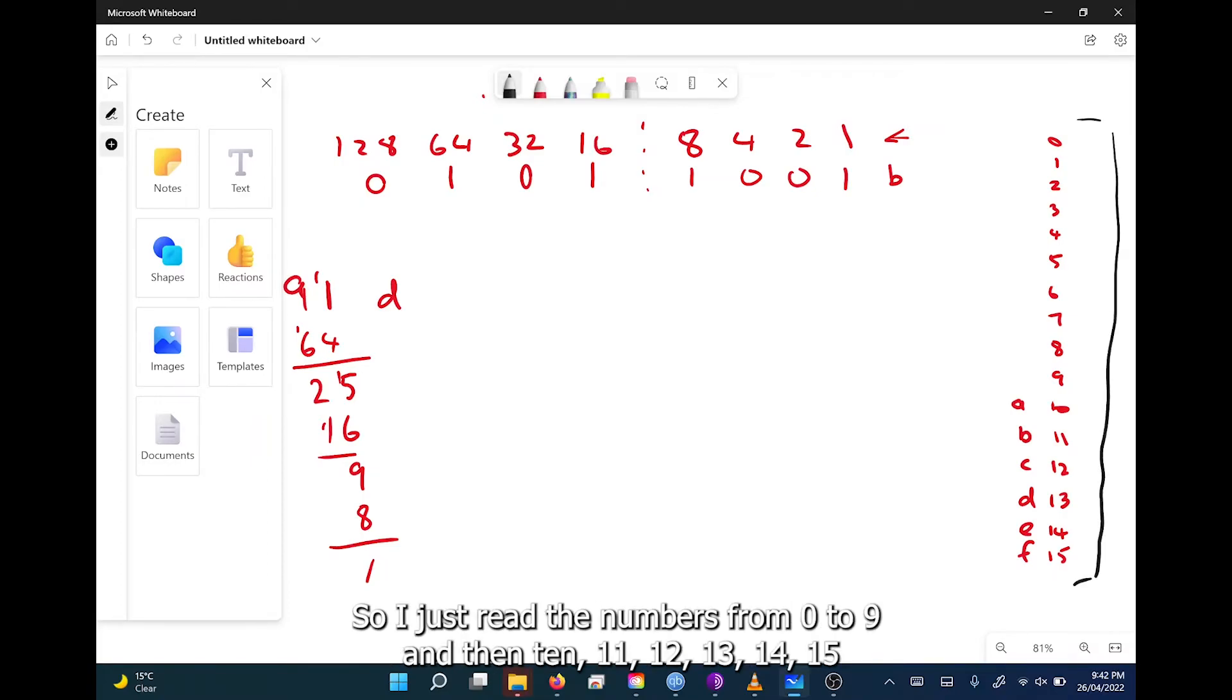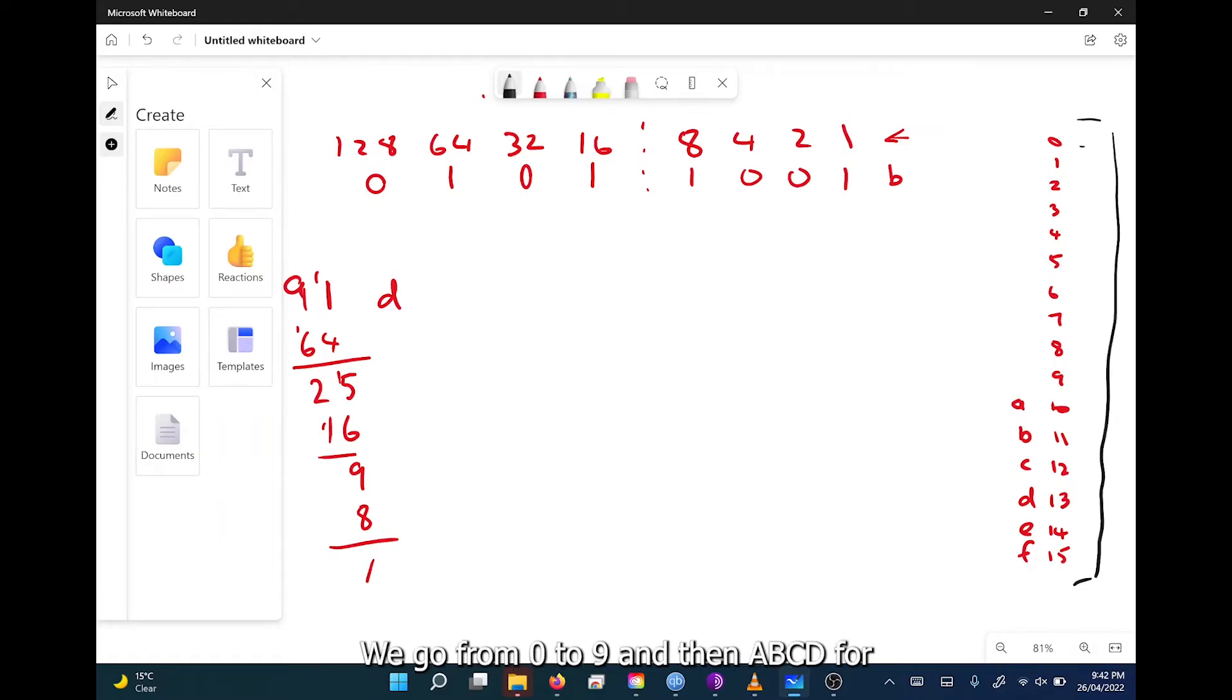I just read the numbers from 0 to 9, and then 10, 11, 12, 13, 14, 15, and I've replaced the double-digit numbers with A, B, C, D, E, F. These are the characters that we use in writing hexadecimal numbers. Hexadecimal is, of course, base 16.